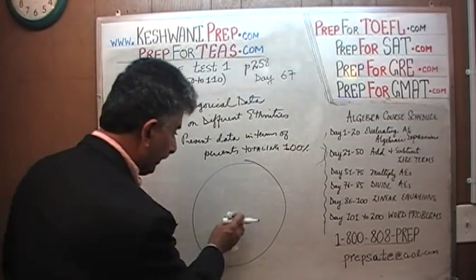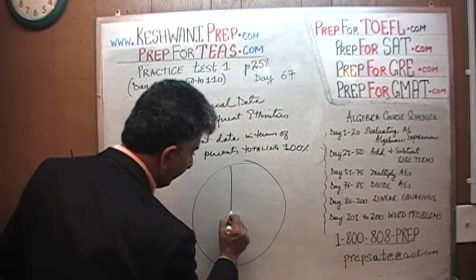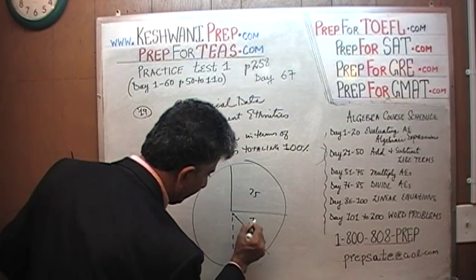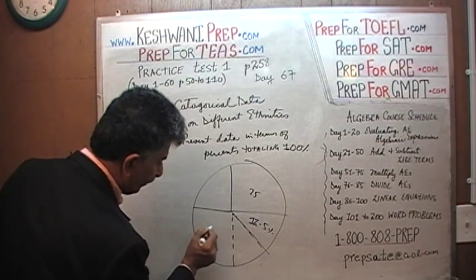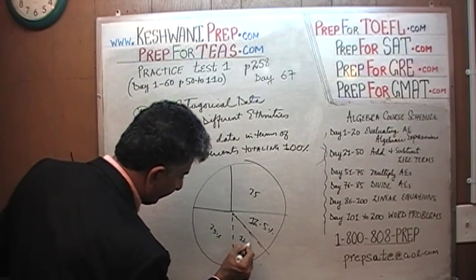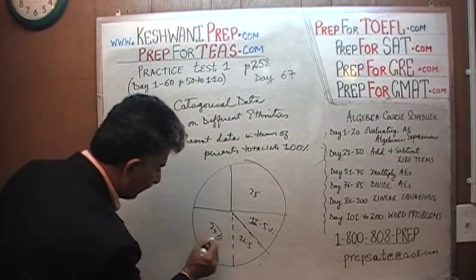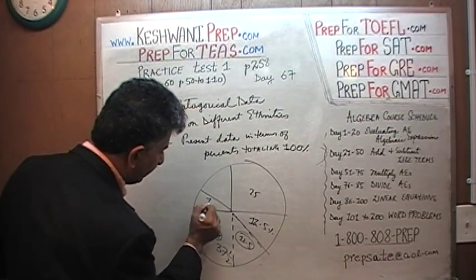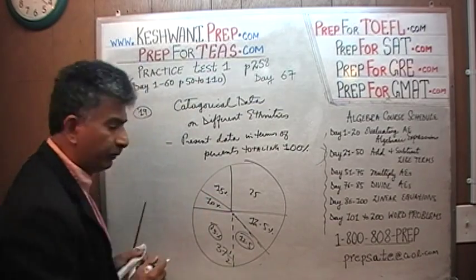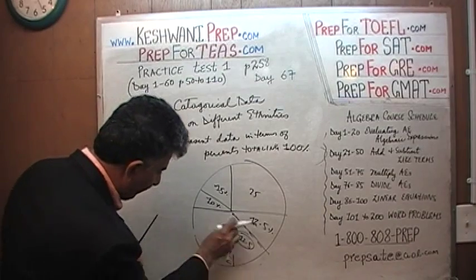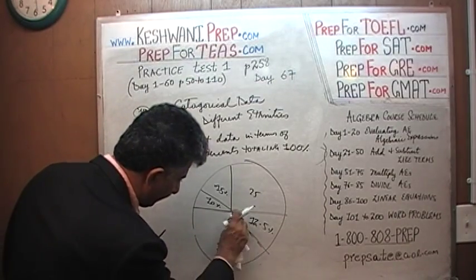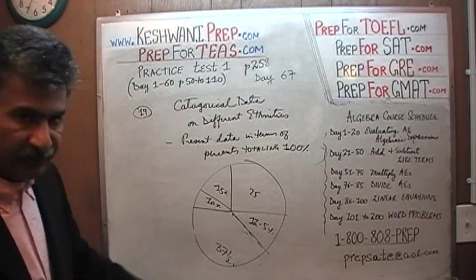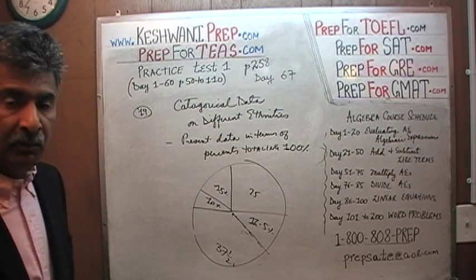I'm just going to make up the data — these are not real numbers. Different ethnicities: let's make it a nice 25% here, and then 25% there. I'm just going to make half of that, so this will represent 12 and a half percent. So 25% plus 12 and a half percent together represent 37 and a half percent. And let's say another 10% and 15%. So this represents the total number of nurses, and of course it has to be 100% all together.